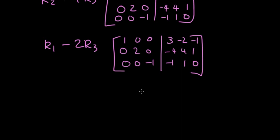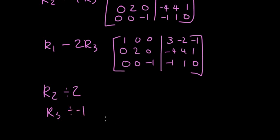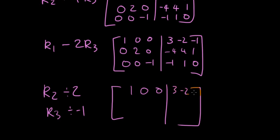We are now at a stage where the only differences between the left-hand side and the identity matrix are a 2 in the middle and a −1 on the bottom right. So the last thing to do is divide row two by 2 and divide row three by −1. Since I'm doing this to whole rows, it is allowed. Row two divided by 2 becomes: 0, 1, 0, −2, 2, ½. Row three divided by −1 becomes: 0, 0, 1, 1, −1, 0.